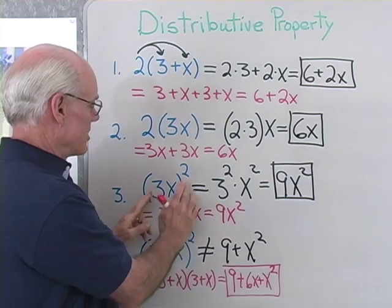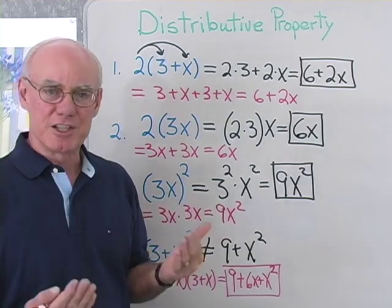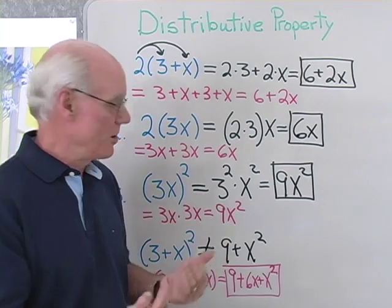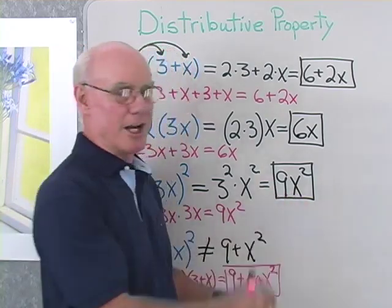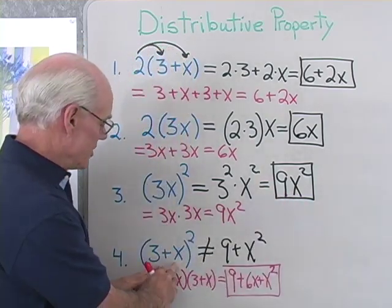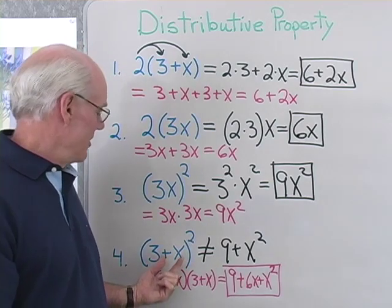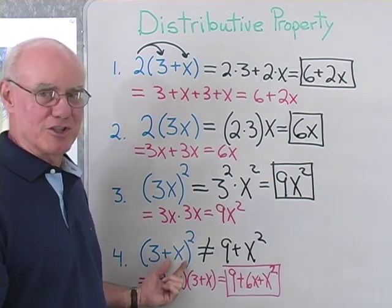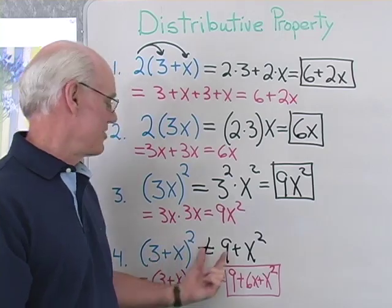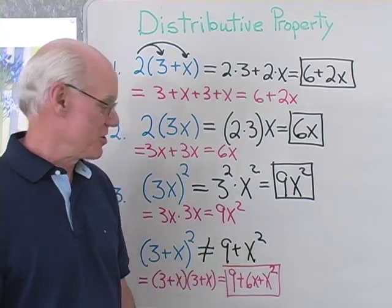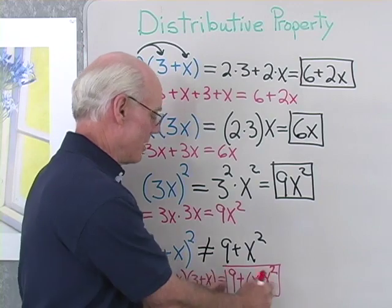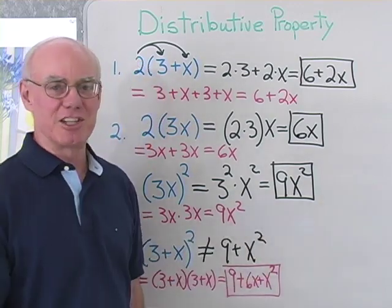When you see 3X to the second power you might think 3X times 3X or 3 squared times X squared. Either way, you end up with 9X squared. And when you see this expression, this is probably one of the most common mistakes students make in algebra when they're just starting out. You try not to write this as 9 plus X squared. Even if you don't know how it comes out, at least you want to know that it doesn't come out to be that.